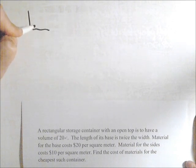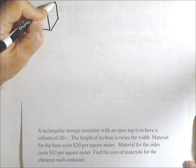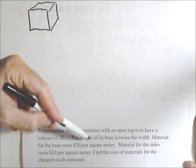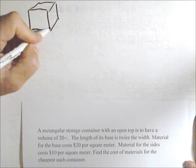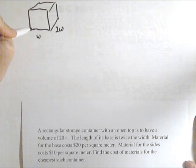First let's draw our box and assign variables to the parts that we don't know. The length of the base is twice its width. So if I call this the width, then I might want to call this 2w. And then it's got a height, which we don't know.